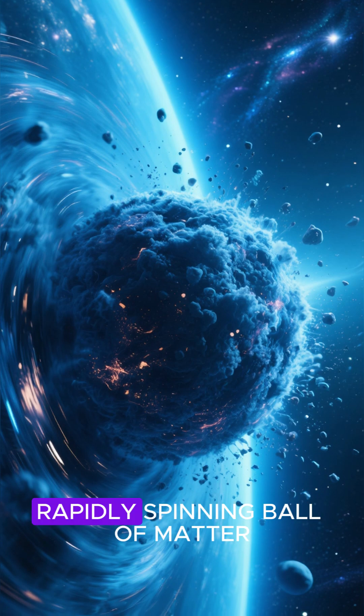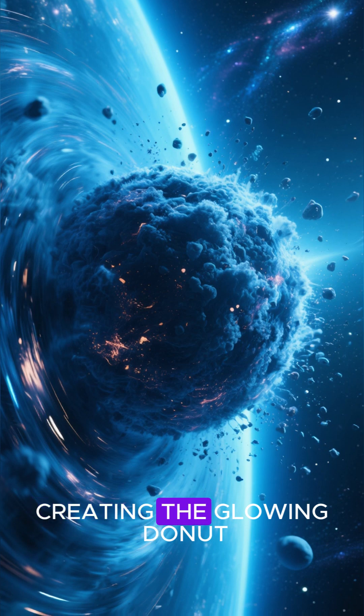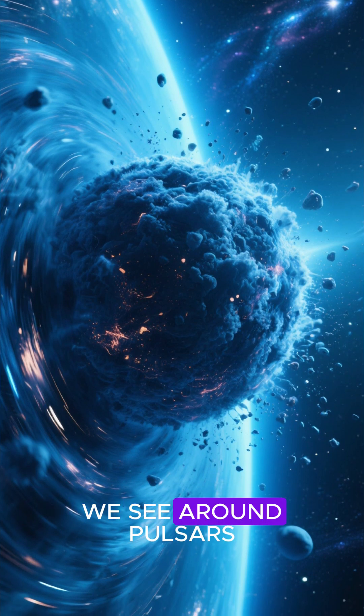forming a dense, rapidly spinning ball of matter. And some of that matter gets thrown out into space, creating the glowing donut we see around pulsars.